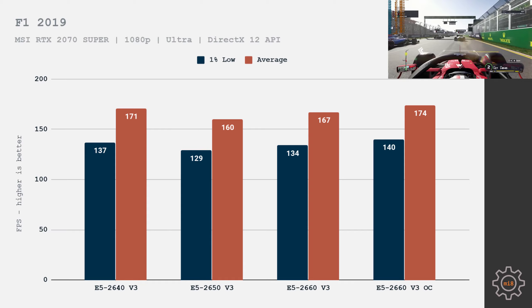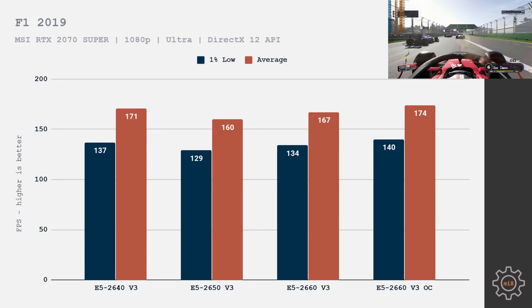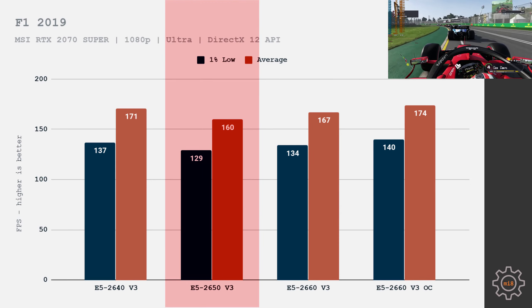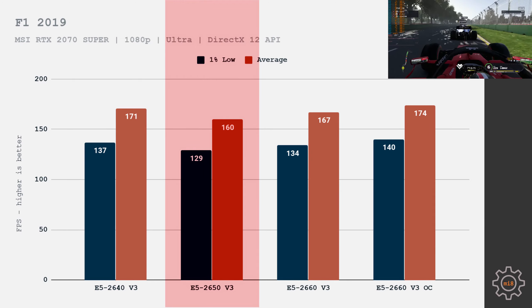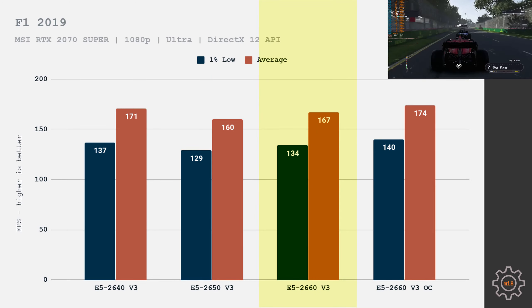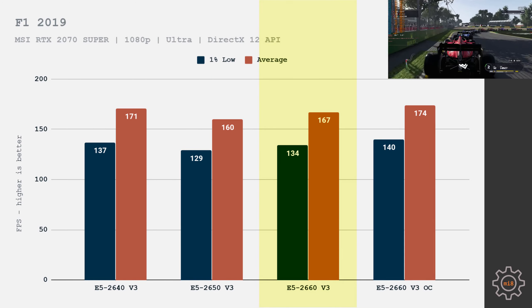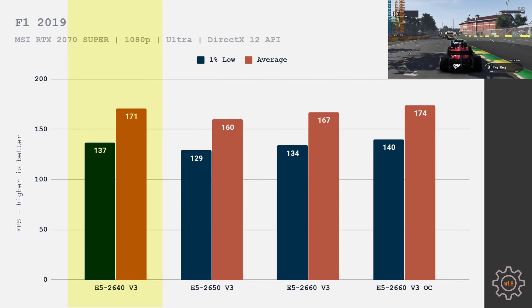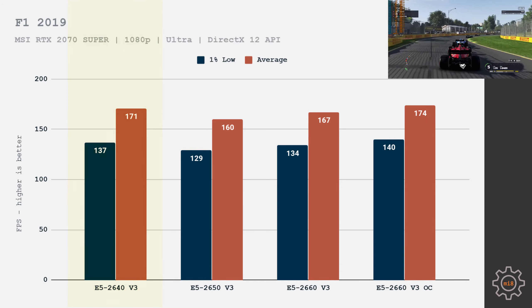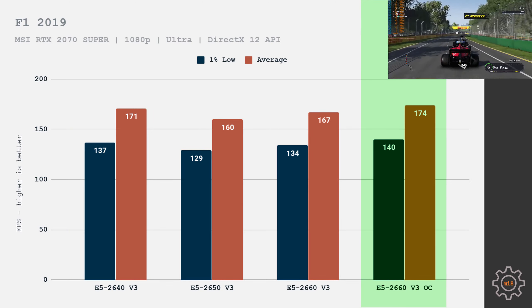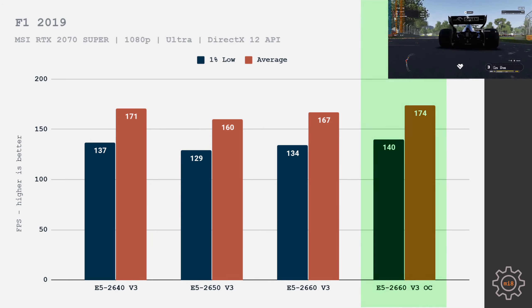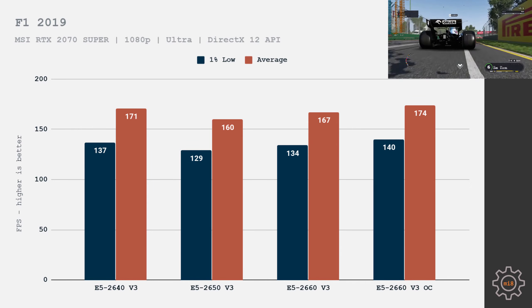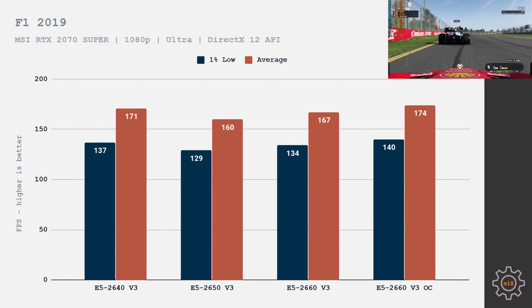F1 2019 was tested at 1080p, ultra graphics preset, DirectX 12. The 2650 takes last place again with 129 fps 1% low and 160 fps average. The 2660 without overclock gets 134 fps 1% low and 167 fps average. The 2640 scores 137 fps 1% low and 171 fps average. The overclocked 2660 leads with 140 fps 1% low and 174 fps average. The gap between best and worst is over 10 fps — significant on one side, but less so considering the price difference.